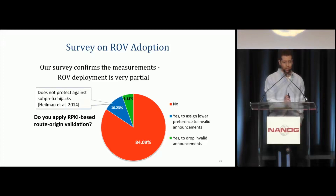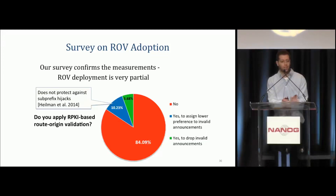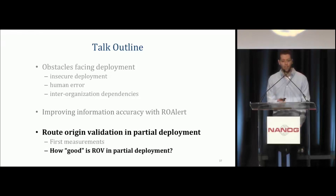Regarding the 10% doing de-preference: it was shown that de-preference does not help at all against sub-prefix hijacks, because you would only be informed of one prefix so you have nothing to de-prefer it with. Also, if you have only one provider connecting you to the internet, you might only receive one advertisement for the prefix and be fooled into taking it. So deployment of ROV seems very partial. The question is: how good is ROV under partial deployment, and what security benefits can we expect?